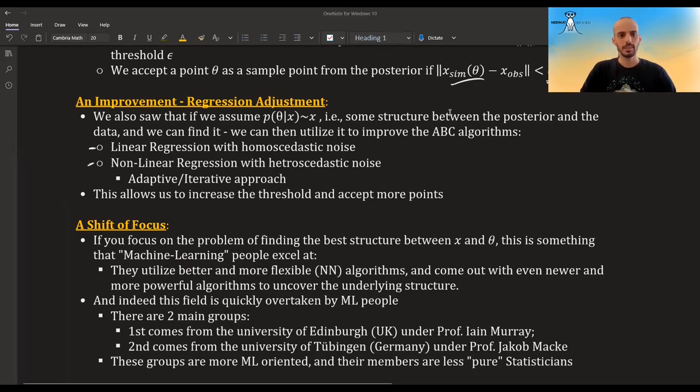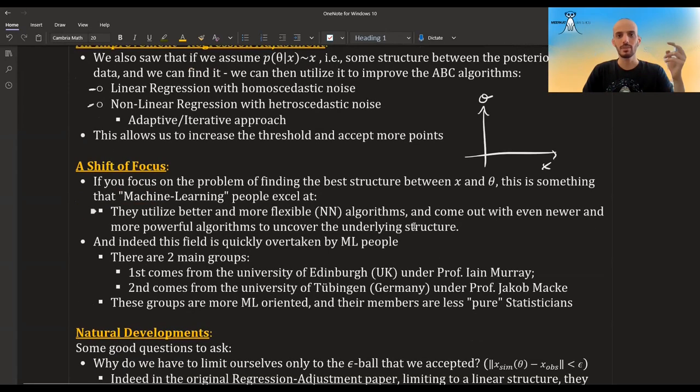Now this regression adjustment improvement really starts this shift of focus in this field. If doing a regression adjustment allows us to improve the algorithm so much that we can take maybe all the points or almost all the points, then the problem really becomes finding this structure between x and theta. So finding this structure between x and theta, and finding structure is something that machine learning people are really good at.